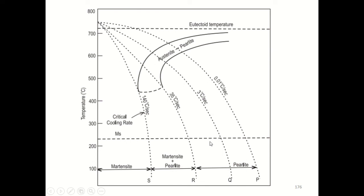Both the TTT and CCT diagrams are experimentally determined for an alloy of a specific composition with variables of temperature and time. These diagrams are useful in predicting the microstructure after some period of time at a constant temperature or during continuous cooling, and especially helpful in predicting the properties when an alloy is subjected to heat treatments.